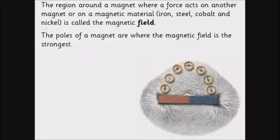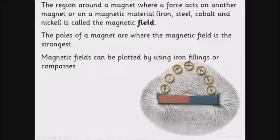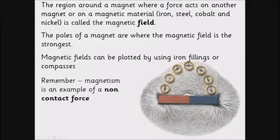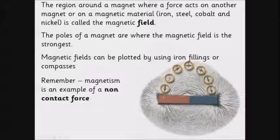The poles are where the field is the strongest. You can see from this diagram, the poles are where the field is the strongest. And you can plot them using iron filings or compasses. But remember, magnetism is an example of a non-contact force. So these compasses are being moved, there's a force on this compass, even though it's not in contact with the magnet.